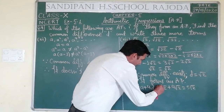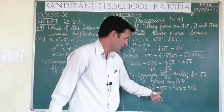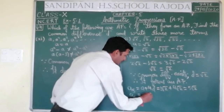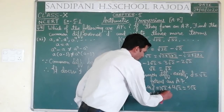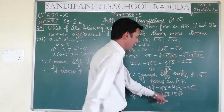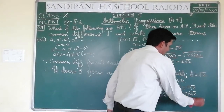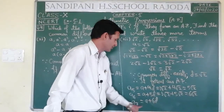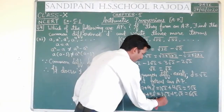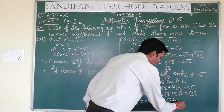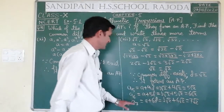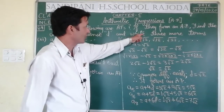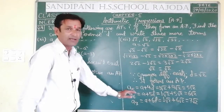Since 4 terms were given, we calculated the next 3 terms: A5 = 5√2, A6 = 6√2, A7 = 7√2. These are the 3 more terms as required by the question.